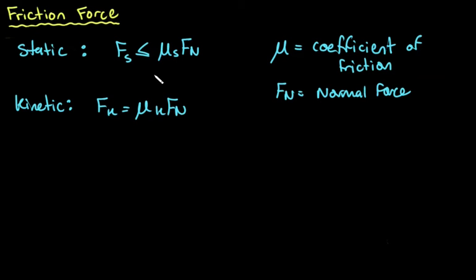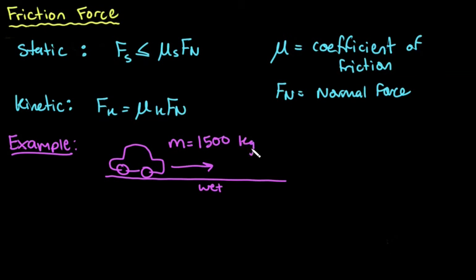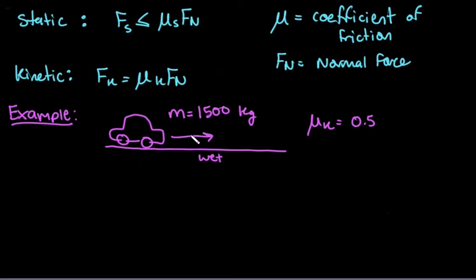Let's take a look at an example using both formulas. For kinetic friction, suppose we have our car on wet asphalt, so it skids. The mass of the car is 1500 kilograms, and we assume the coefficient of kinetic friction is 0.5. To find the friction force, we first need the normal force, and to find that we need the gravitational force, which is mass times gravity.